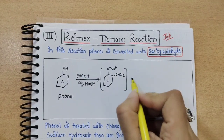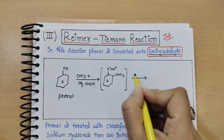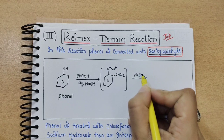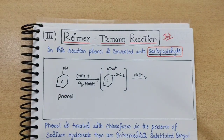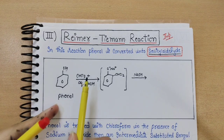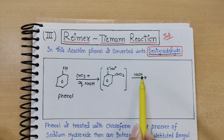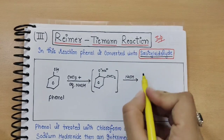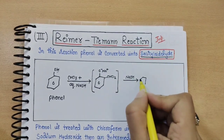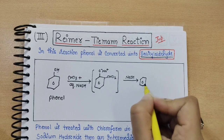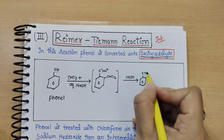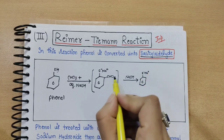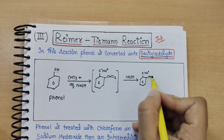The next step involves sodium hydroxide again. After the intermediate compound is formed, the ortho position will become CHO — an aldehyde group. The oxygen remains negative and sodium positive as before, but at this ortho position, CHO is introduced.